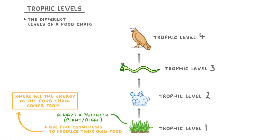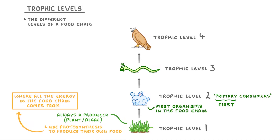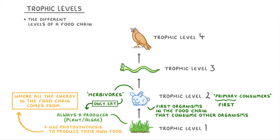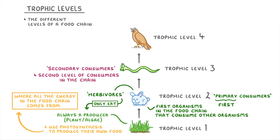The second trophic level is made up of primary consumers, which means first consumers, because these are the first organisms in the food chain that consume other organisms. They can also be called herbivores because they only eat plants and algae. The organisms in the third trophic level are known as secondary consumers because they're the second level of consumers in the chain.